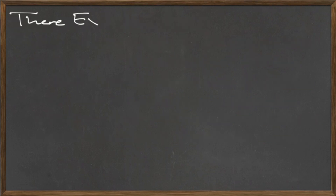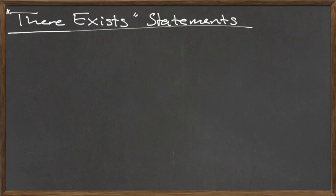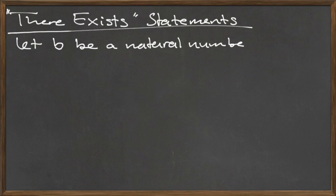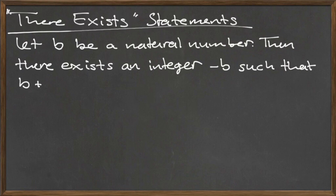The final type of statement we'll introduce in this video is the there exists statement, which is a bit different from a for all statement. Remember that a for all statement holds for all numbers of a particular type. However, a there exists statement holds for at least one number of a particular type. There may be more than one solution, but all we know from a there exists statement is that there is at least one number that satisfies the suggested condition. Consider the following example: let B be a natural number. Then there exists an integer negative B such that B plus negative B is equal to zero. In this particular case, negative B is the only integer that satisfies this condition.